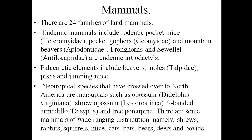There are also some mammals with a wide range of distribution — not only in one or two geographical regions but in more. They are also found here, like shrews, rabbits, squirrels, mice, cats, bats, beavers, deer, and bovids. These are more generalized species distributed across many biogeographical regions.